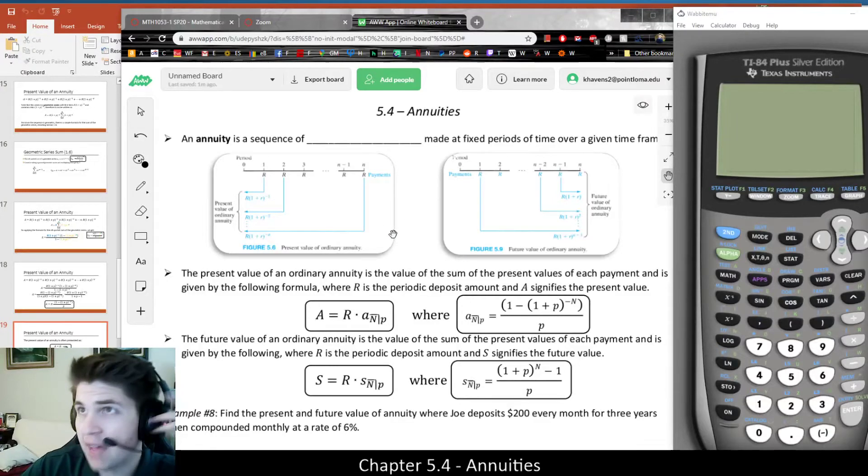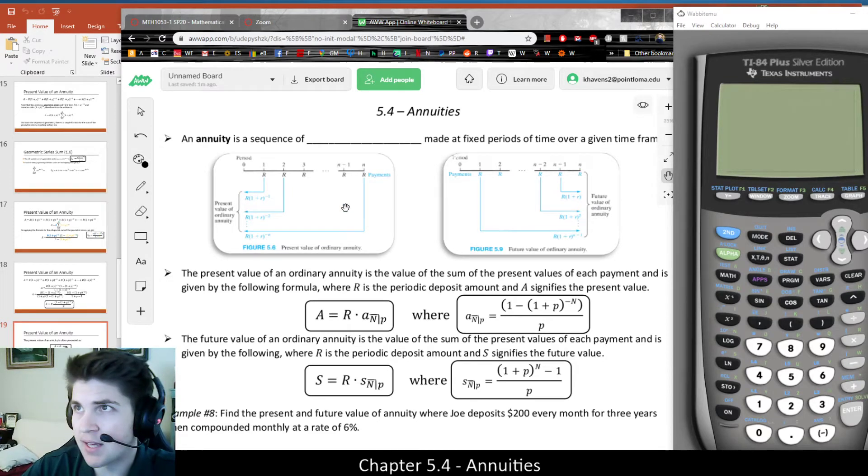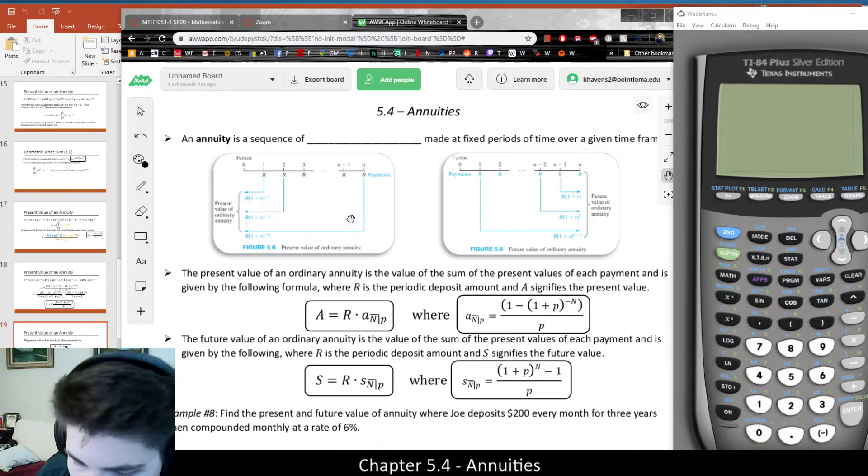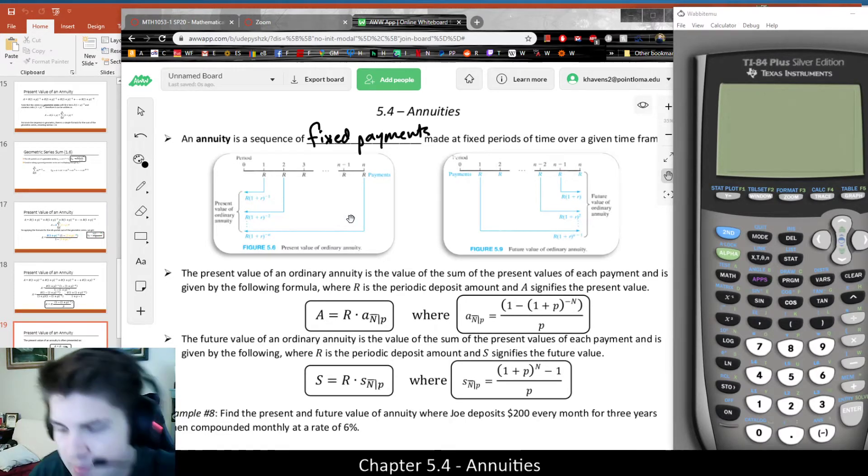Okay, so in the packet we have a few of these formulas in an alternate form presented, which is also in the slides, but I'll just use the packet. And if we want to fill in the blanks just to review, an annuity is a series of fixed payments made at fixed periods of time over a given time frame.